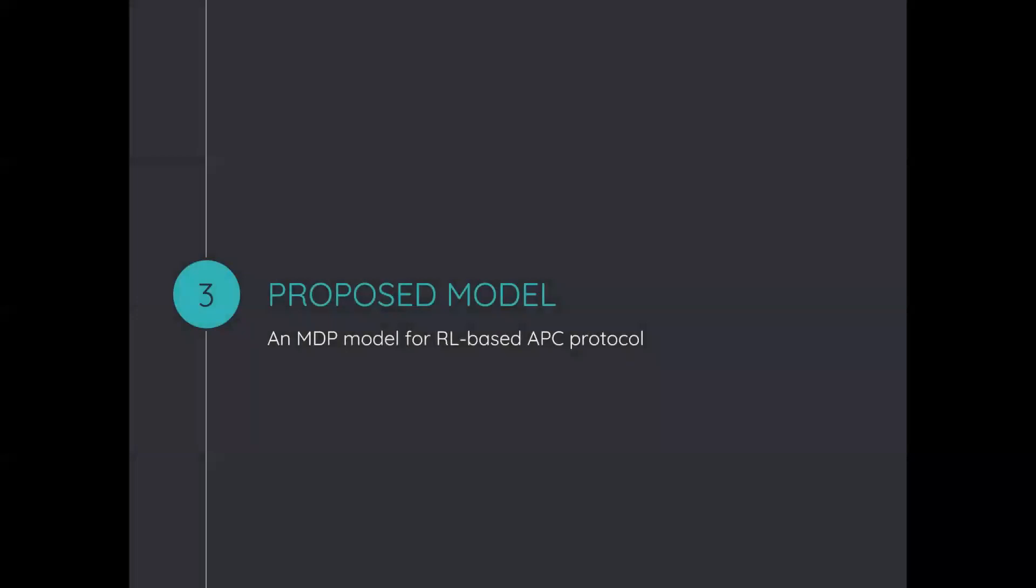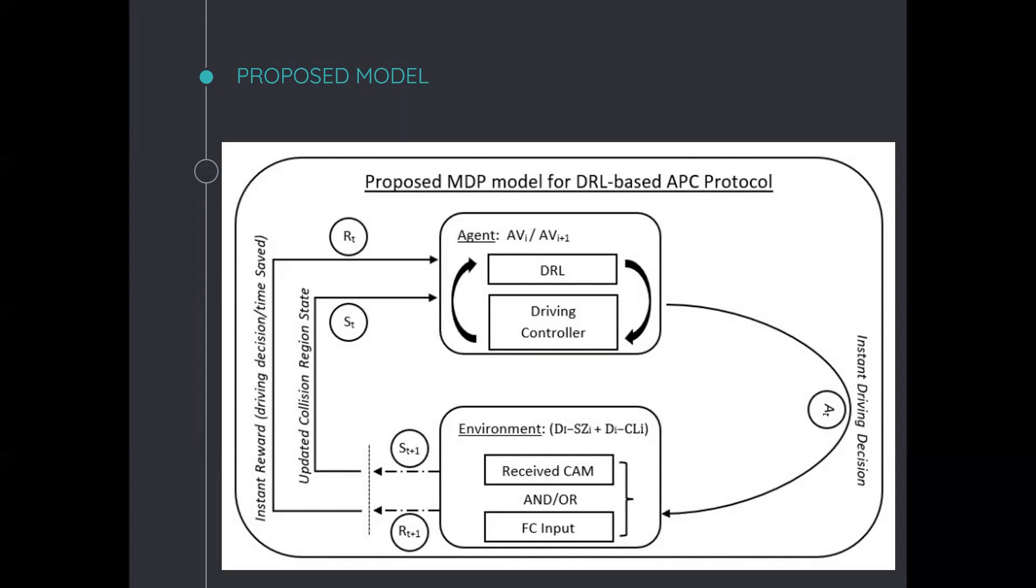We will now move to our proposed MDP for reinforcement learning based autonomous pedestrian crossing protocol. So, generally, the agents that can apply this framework can be the front autonomous vehicle VI or the next coming vehicle VI plus one. Respectively, the autonomous vehicle will observe the state ST of its environment, which is the collision region, at time T, according to autonomous pedestrian crossing.